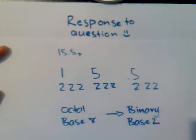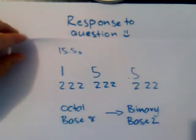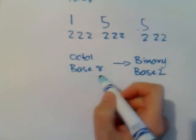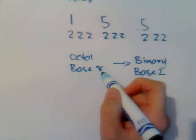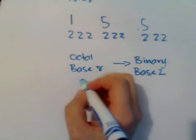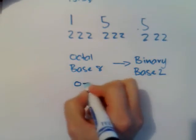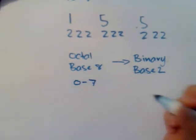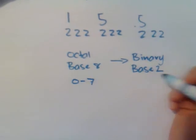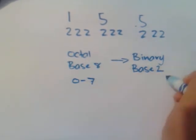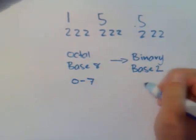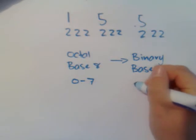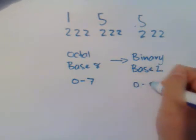So what this means is in base 8 there are 8 different digits in the number system and those digits are 0 to 7. And in base 2 there are 2 different numbers in the number system, so that's 0 to 1.